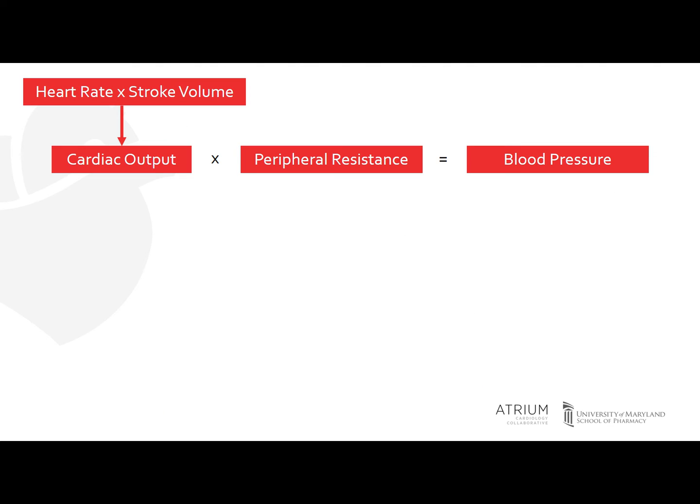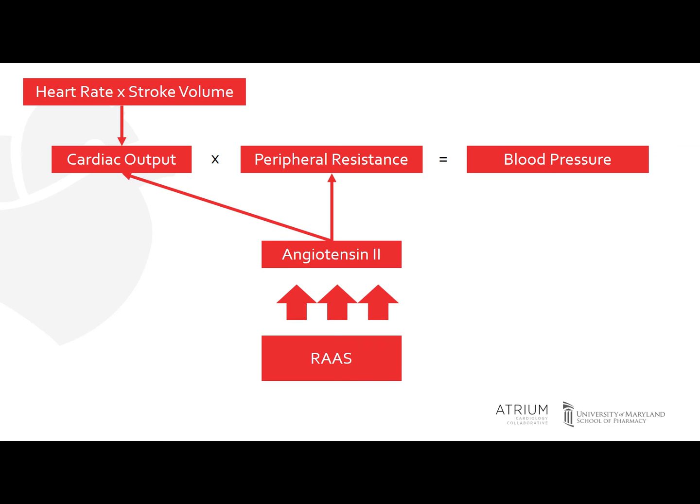So what does that mean in terms of hemodynamics? When the RAS system is activated, this can lead to an increase in angiotensin 2. Angiotensin 2 can increase your peripheral vascular resistance by causing vasoconstriction. Also, angiotensin 2 has a direct impact on your cardiac output.